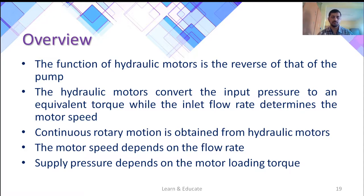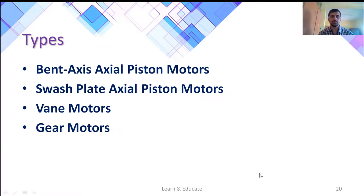If you want a continuous rotary motion, instead of the restricted swivel angle of rotary actuators, you have to use a hydraulic motor as an actuator. There are four different types of hydraulic motors: axial piston, swash plate, axial piston vane motor, and gear motor. These will not be discussed in detail at this level — you just need to understand what the different types are.